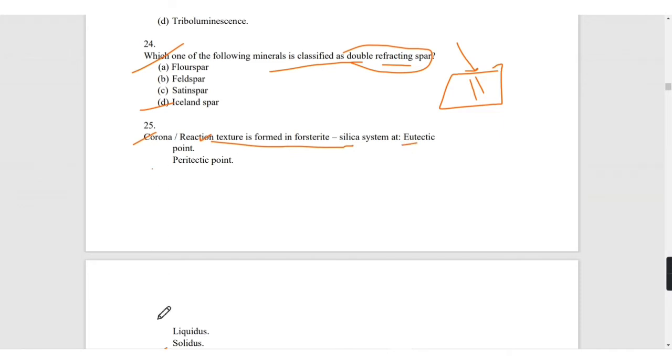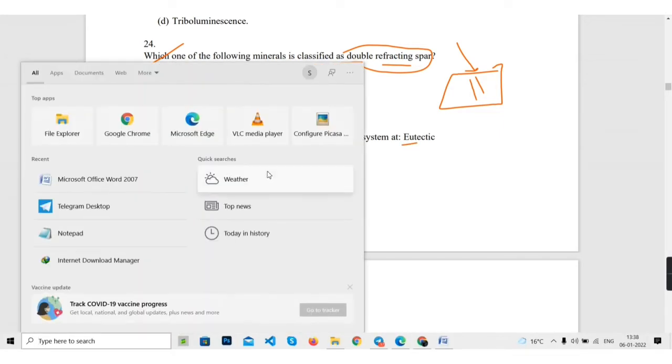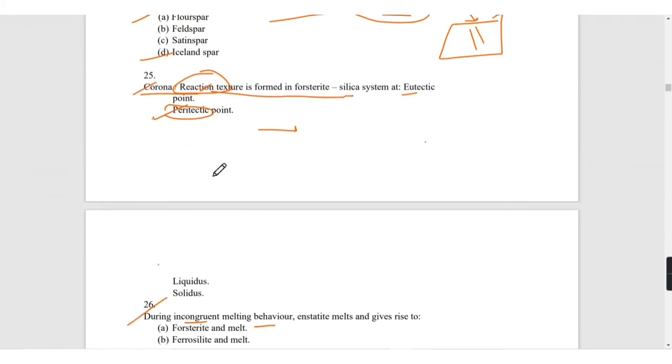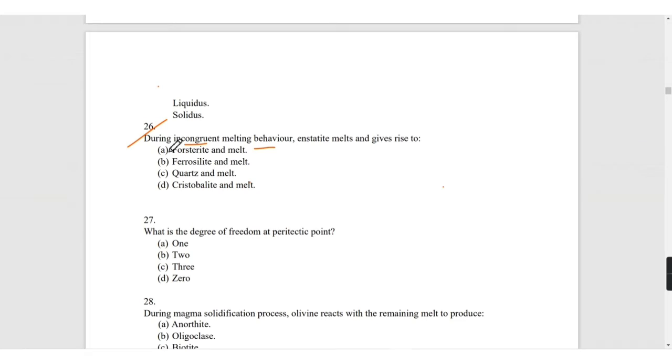Corona reaction texture is formed in forsterite-silica system at eutectic point, peritectic, liquidus, or solidus. If they are talking about the reaction, peritectic is a term which is related to reaction. During incongruent melting behavior, enstatite melts and gives rise to forsterite and liquid.